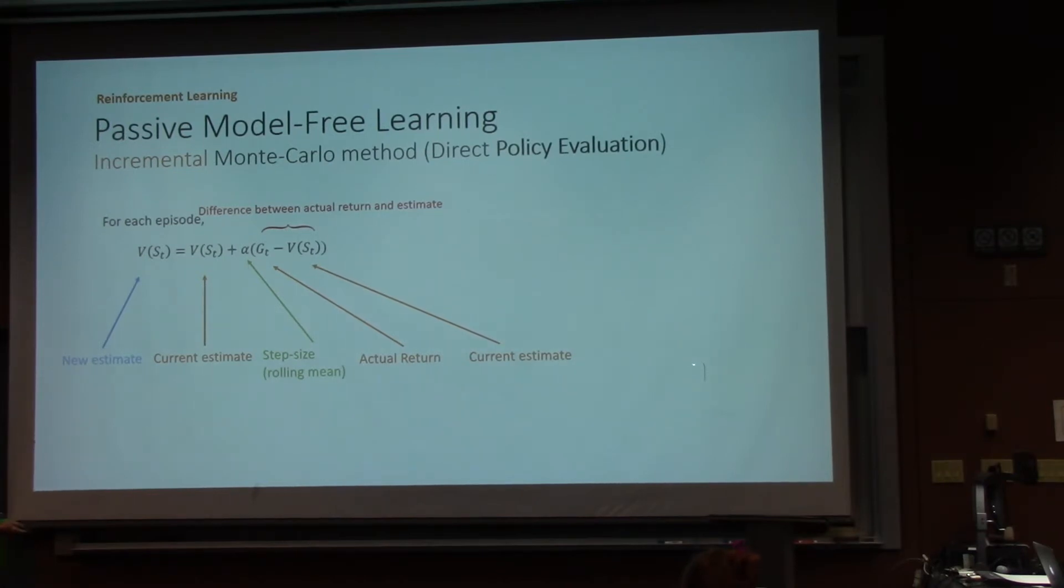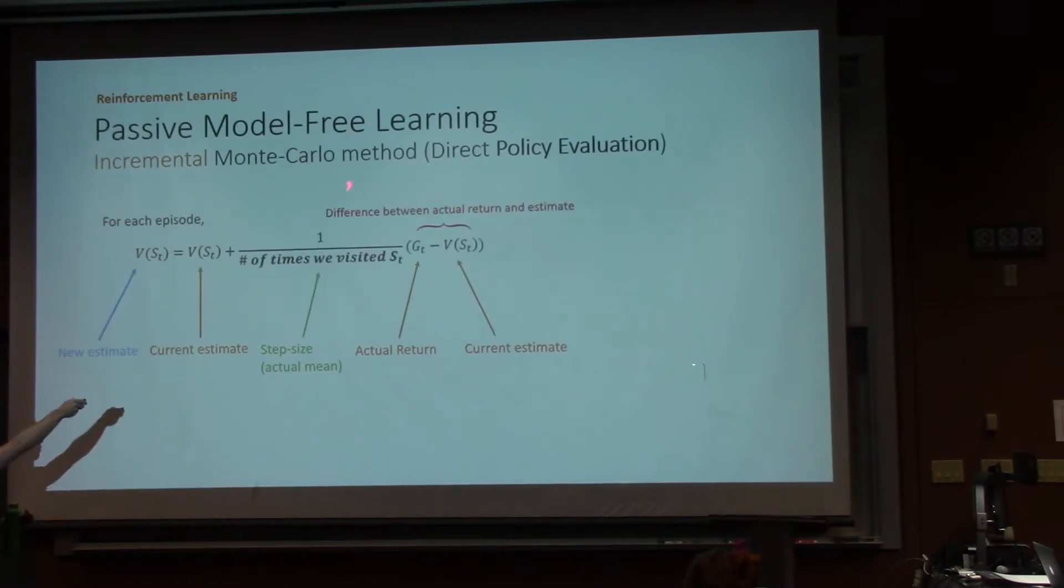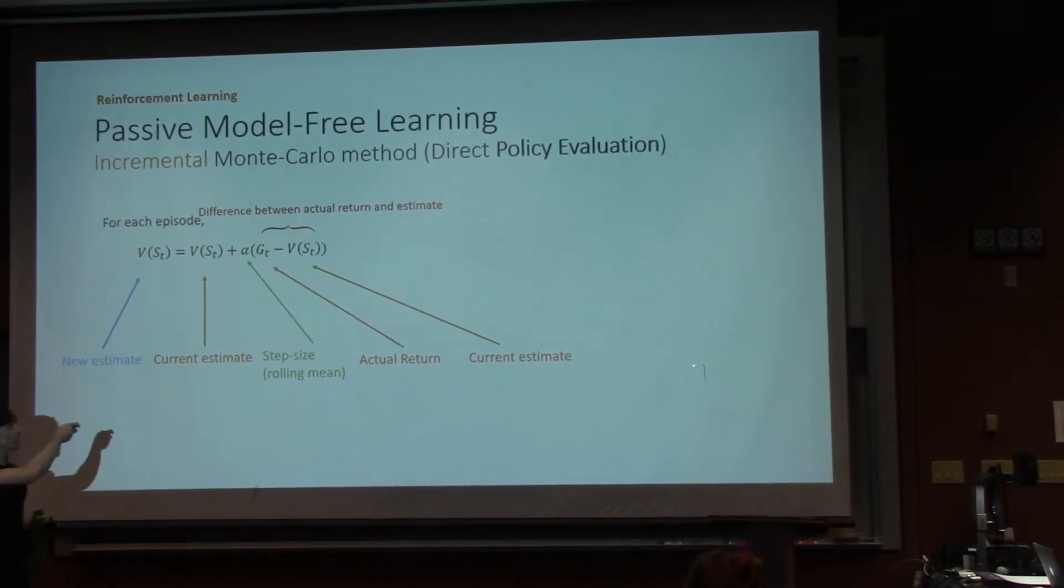So instead of calculating the actual mean, we can calculate a rolling mean by just replacing that one over the number of times we visited state S with alpha, some value between zero and one. And you may have seen this equation as one that's like one minus alpha times V(S_t) plus alpha times something else.